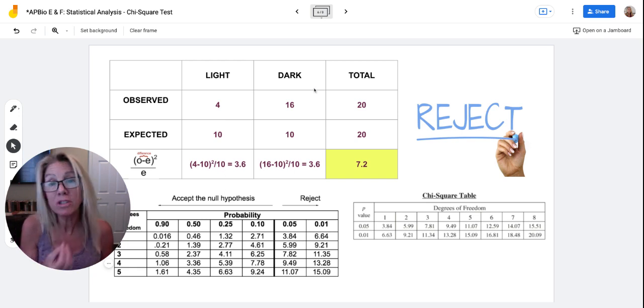But I need to do the dark as well. So there would be 16 on the dark side, 16 minus 10, take that value, square it, put it over 10, and it's 3.6. Now I'm going to tell you when you only have two choices, those two numbers are going to be the same.